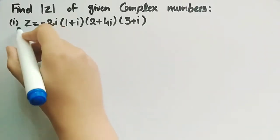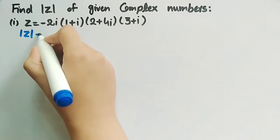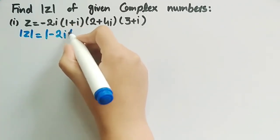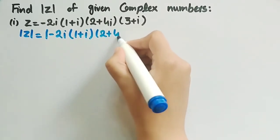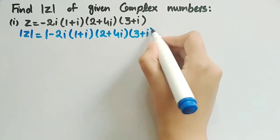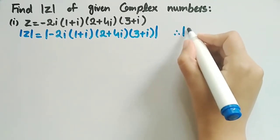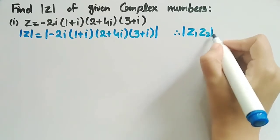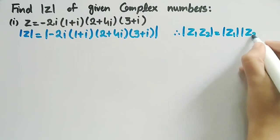Taking mod on both sides, we get mod of z equal to mod of minus 2 iota, times 1 plus iota, times 2 plus 4 iota, times 3 plus iota. From the properties of complex numbers, we know that mod of z1 times z2 is equal to mod of z1 into mod of z2.